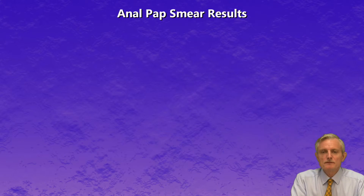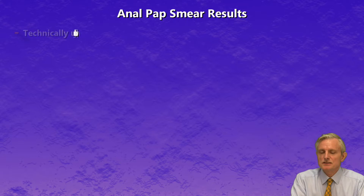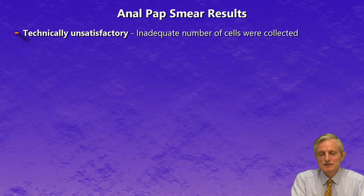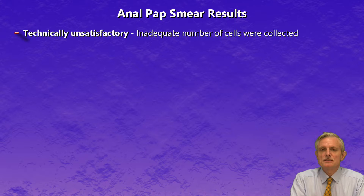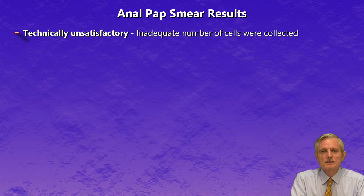Anal pap smear results: there are a number of possible outcomes from an anal pap smear. In about five to ten percent of cases, the result is what's called technically unsatisfactory. This means that inadequate numbers of cells were collected at the time of the procedure. It doesn't mean there's anything specifically wrong in the anal area — just that some technical problems arose. In these circumstances, a simple repeat of the procedure will usually clarify the issue.